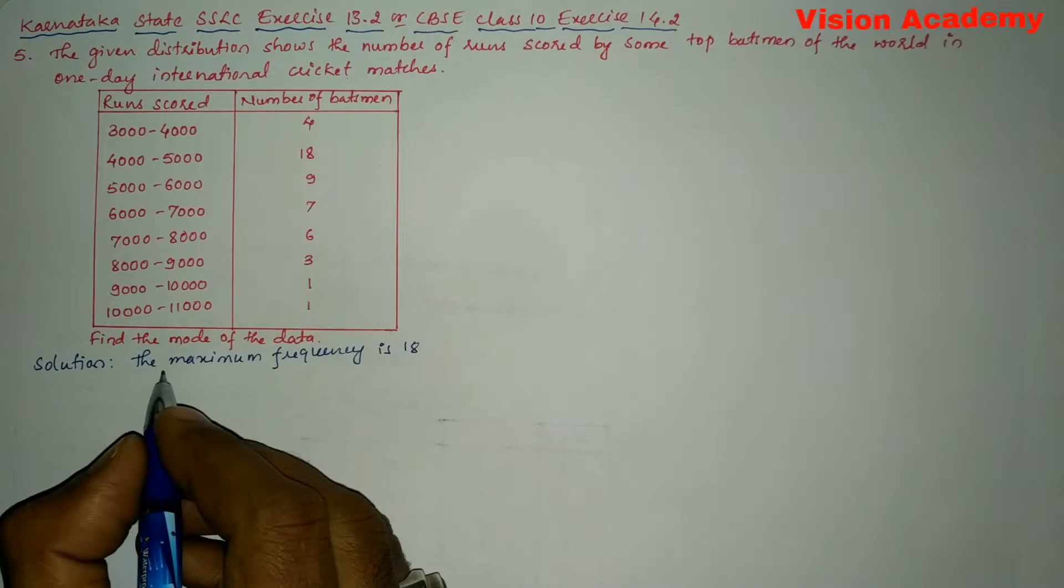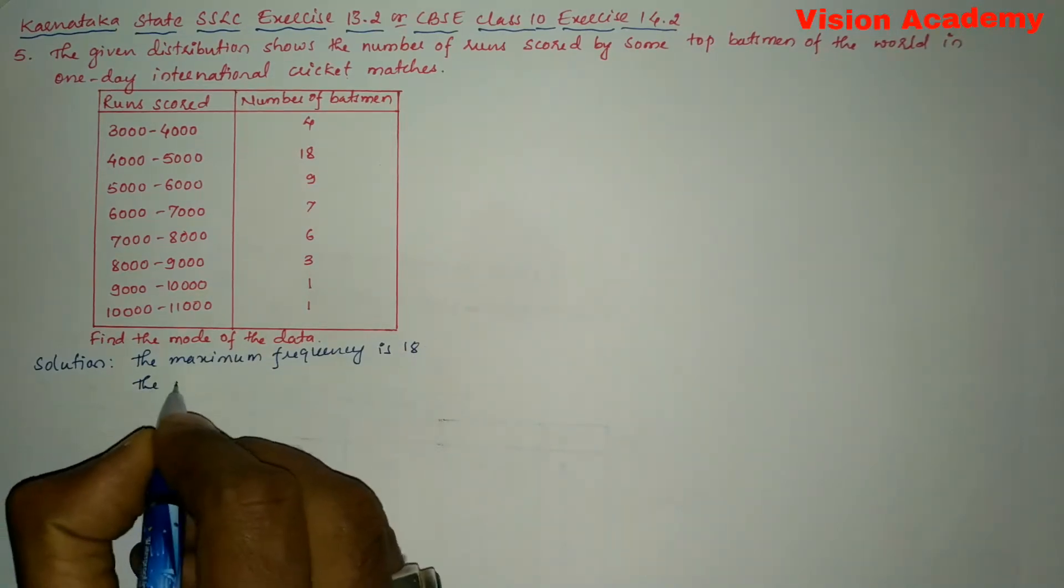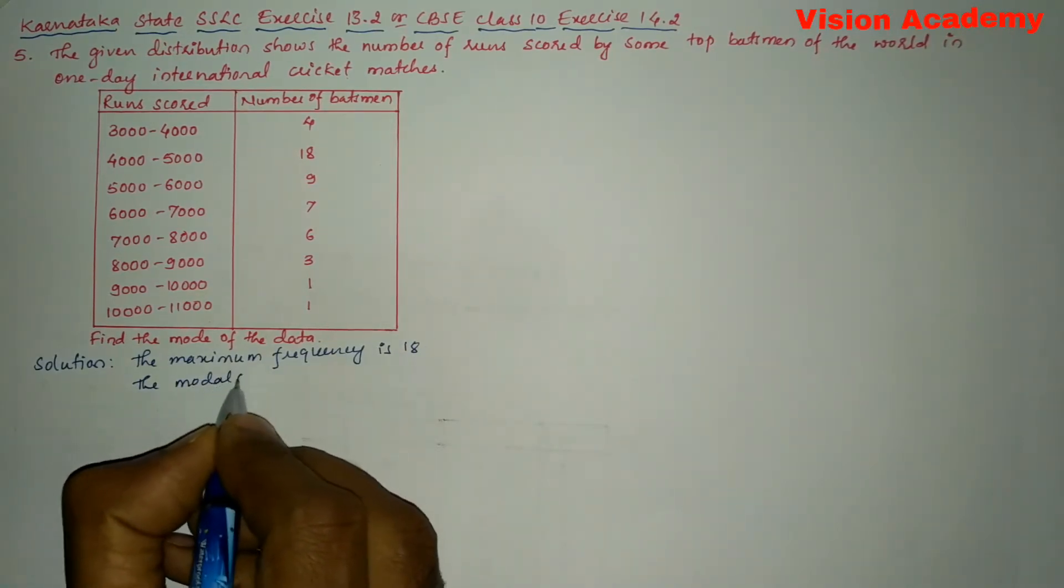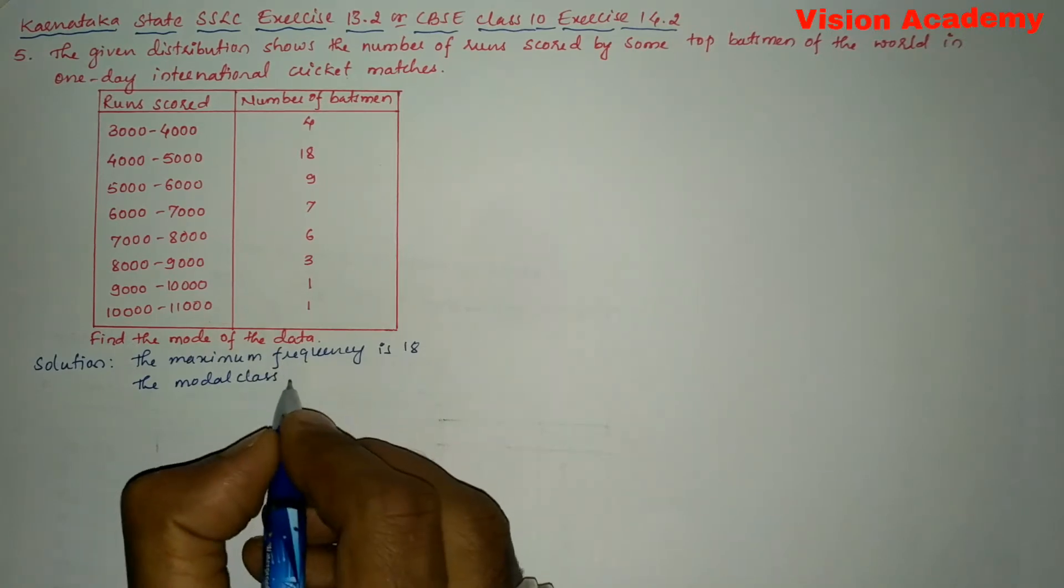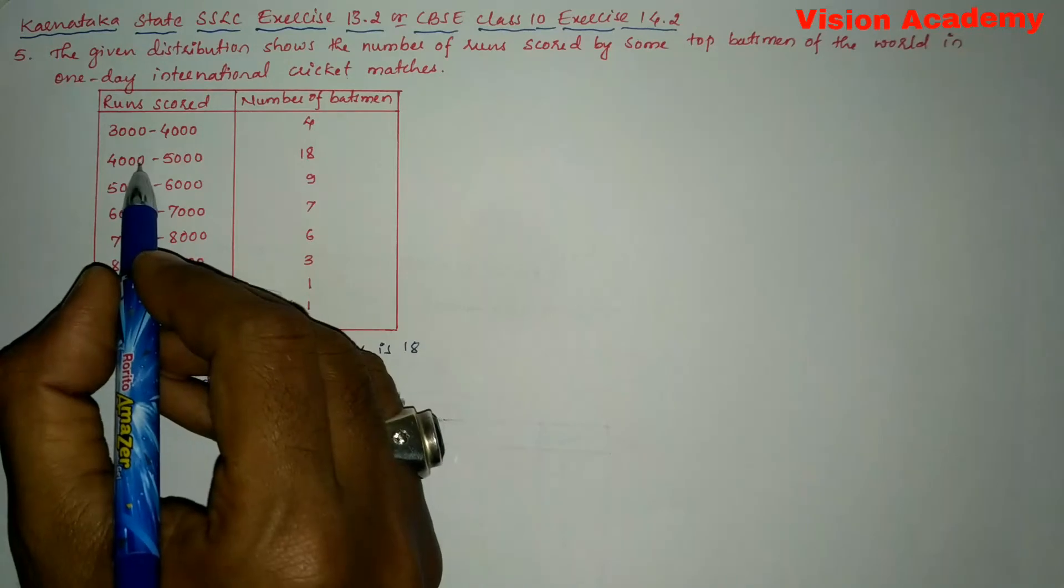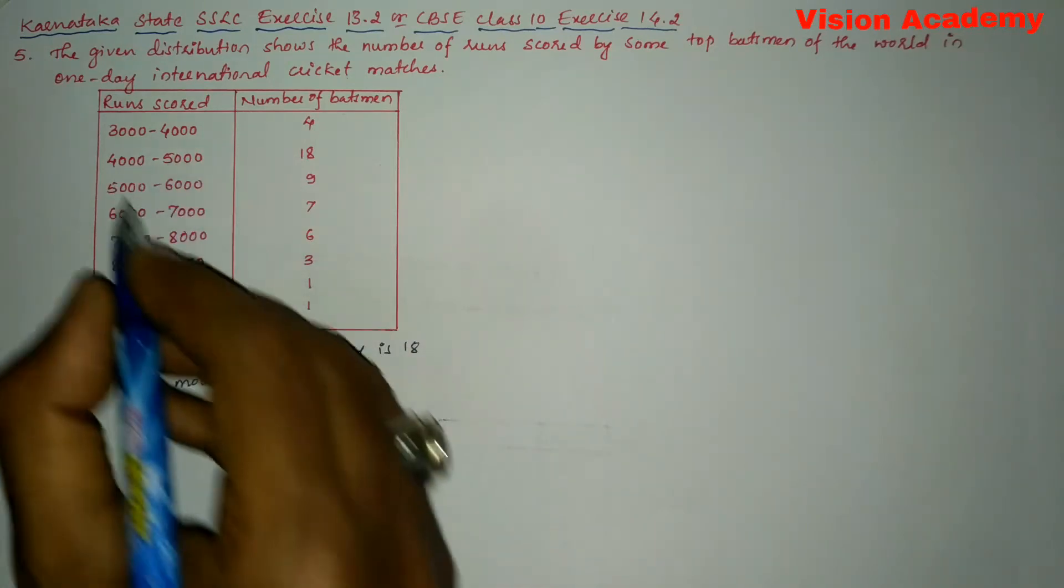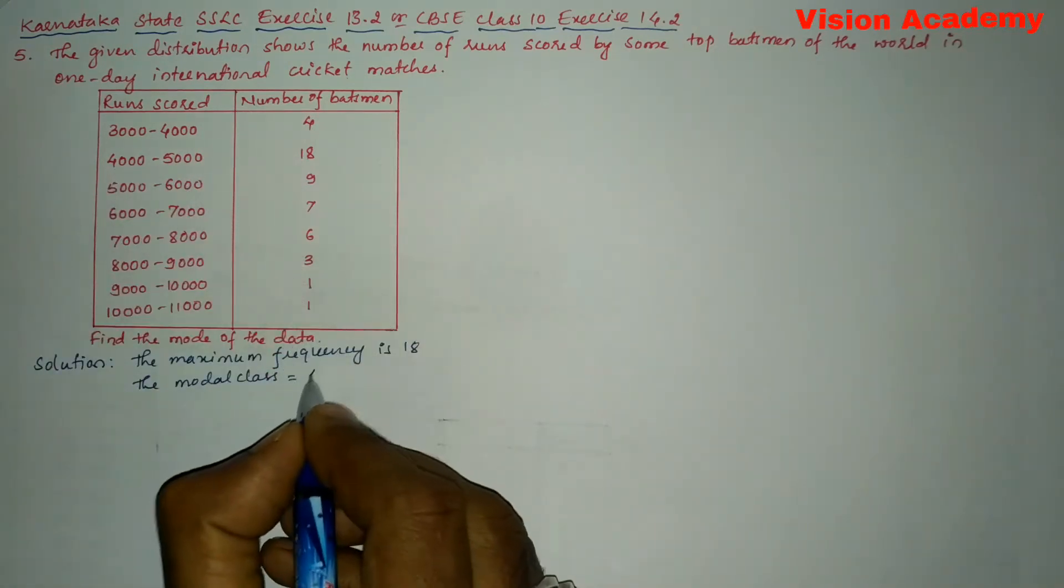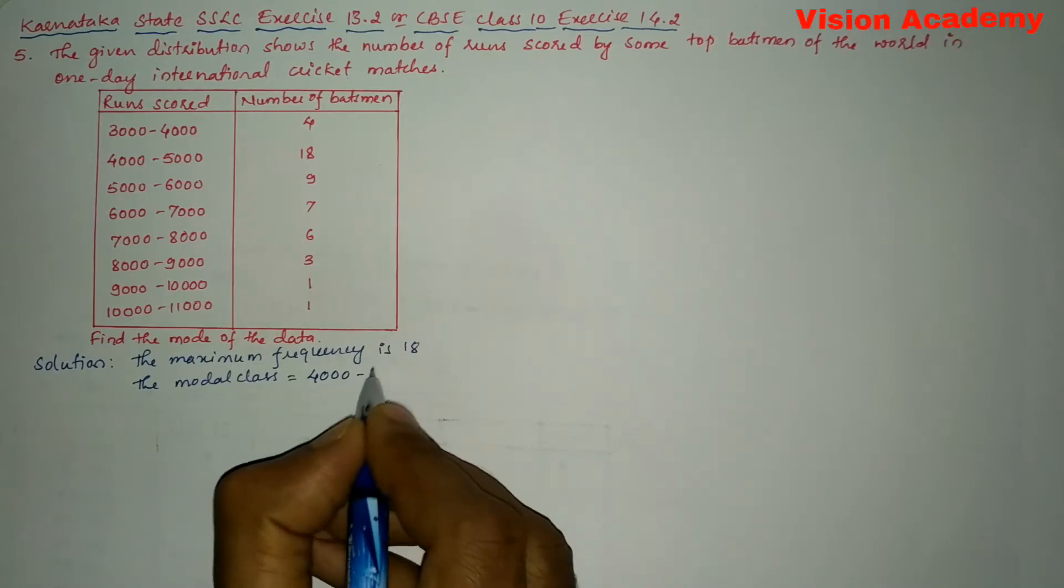Next we will write the modal class. The modal class is equal to the corresponding frequency class interval, that is 4000 to 5000.